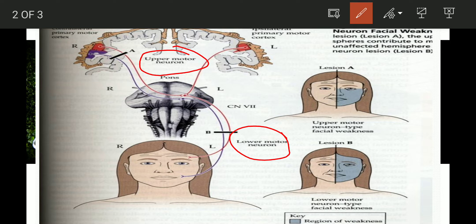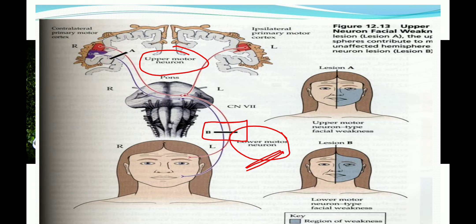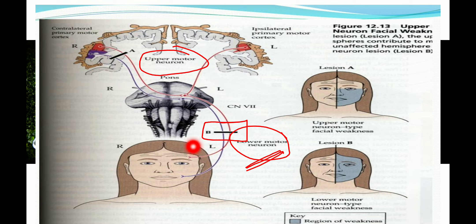Whenever there is a lesion in the lower motor neuron, suppose the lesion is here. Both fibers — those coming from the contralateral primary motor cortex and from the ipsilateral primary motor cortex — will be affected. These fibers supply the upper half and the lower half, so both the upper half and the lower half of the face will be affected whenever there is a lesion in the lower motor neuron.